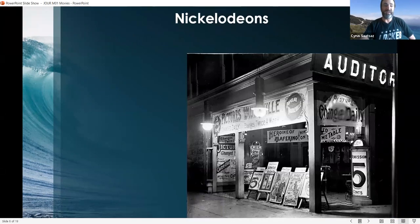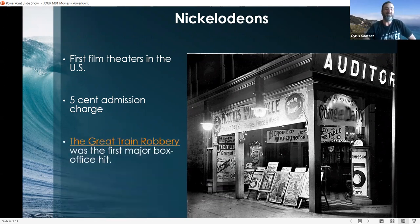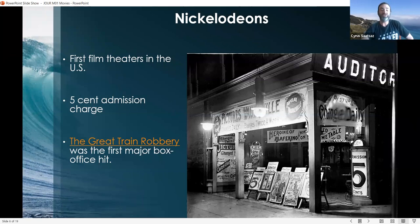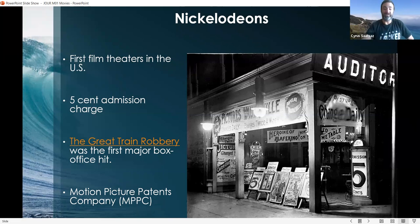Nickelodeon theaters were shortly after introduced — called this because you literally paid five cents to enter them. These were the first film theaters in the United States. The Great Train Robbery was the first major box office hit, and if you search YouTube you can actually see the film — it's kind of entertaining, just a bunch of robbers who rob a train. The Motion Picture Patents Company was also introduced to prevent copyright violations with films.